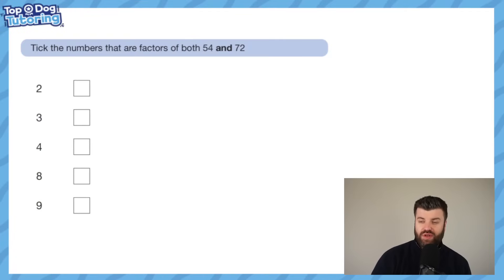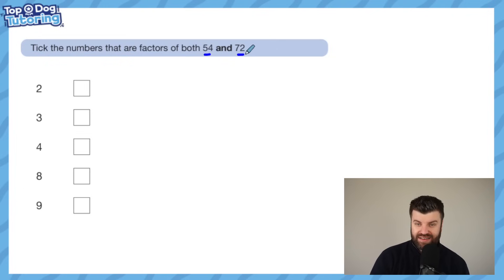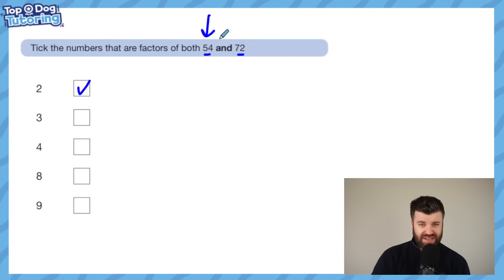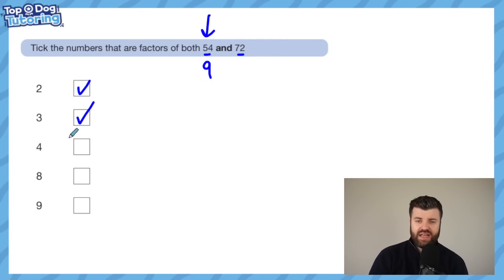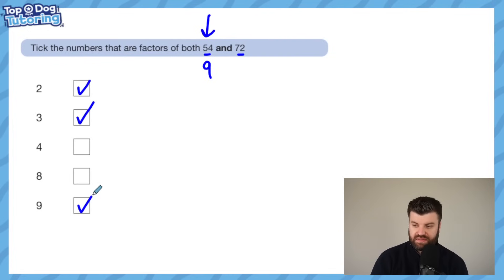I'm going to start with a question where it's less of a trap, but I'm going to show you what children might do to get these wrong. 'Tick the numbers that are factors of both 54 and 72.' If you dive straight in, you might just be thinking of 54 - it's even so it's in the two times table. Is it in the three times table? A quick trick: add the digits up. Five plus four is nine, so 54 is in the three times table. Is it in the fours? 12 fours are 48, add four is 52, add four is 56 - no. For nines: nine times six is 54, yes.